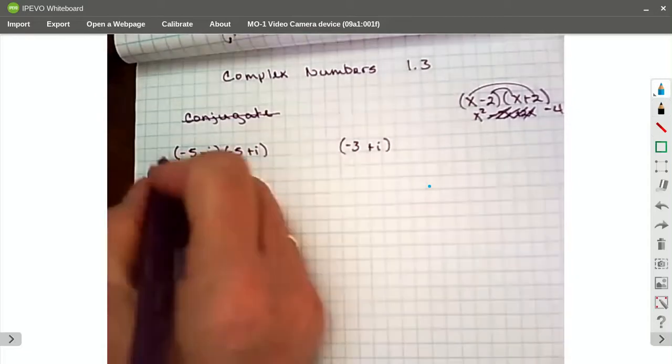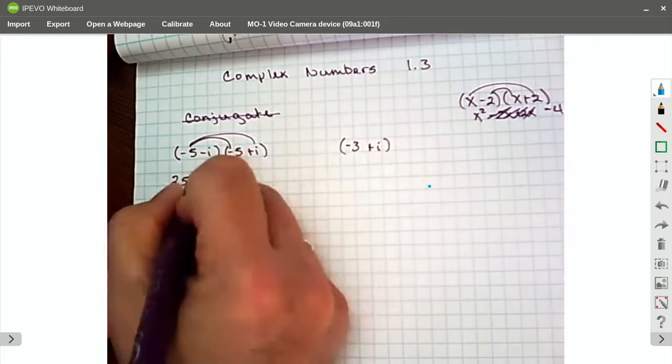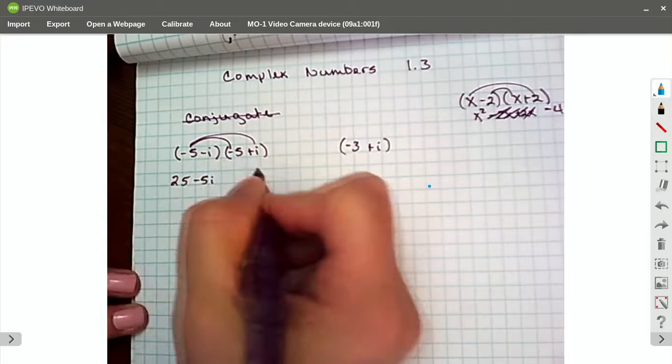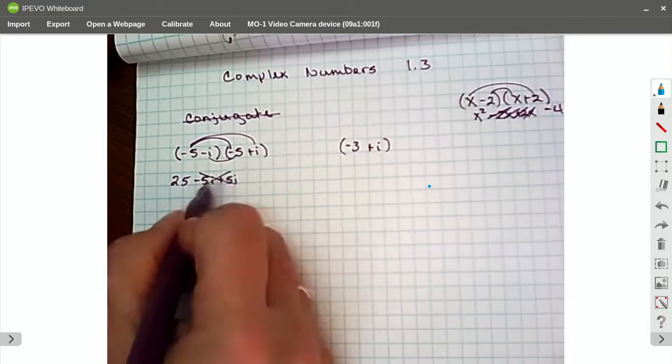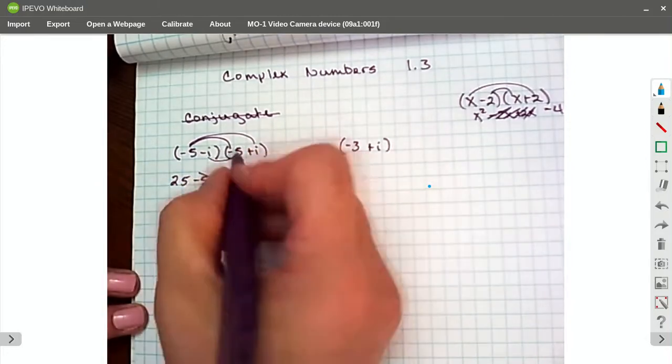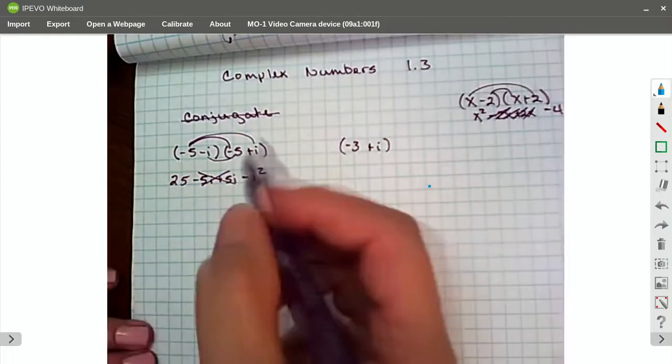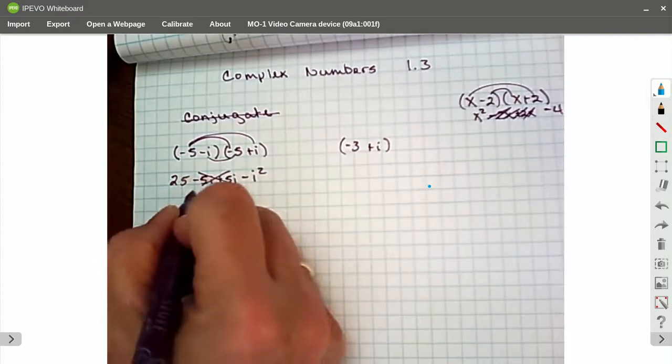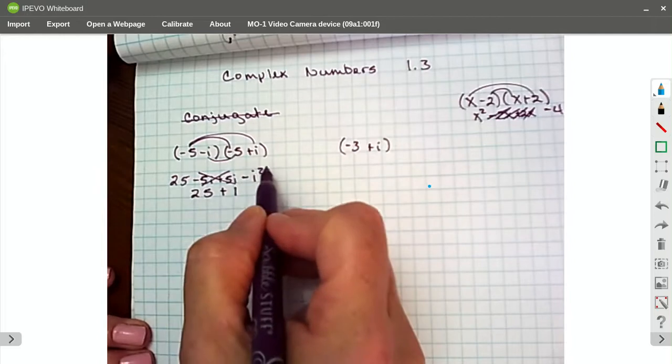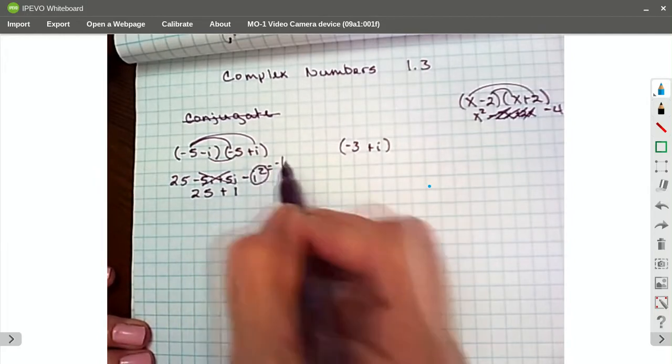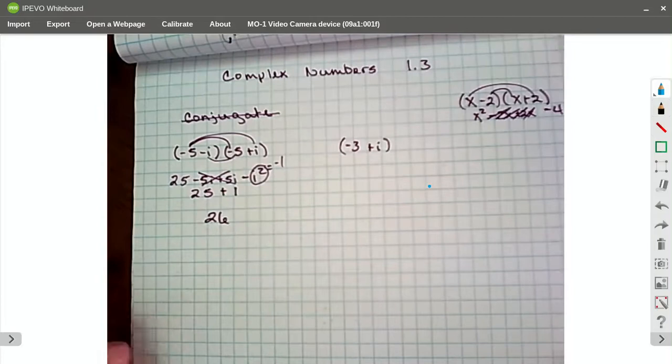So I'm negative 5 times negative 5, and that's going to be 25. Then I have negative 5 times i, so that's a negative 5i. And a negative i times a negative 5 is a positive 5i. There's my cancellation. And negative i times positive i is negative i squared. And that's going to end up being 25 plus 1, because you have a negative here. And remember that i squared is negative 1. So I have a negative negative 1, so that gives me 26.